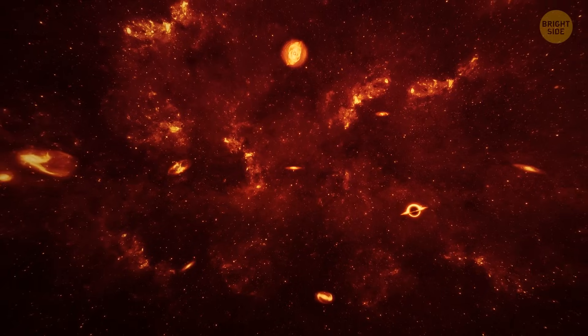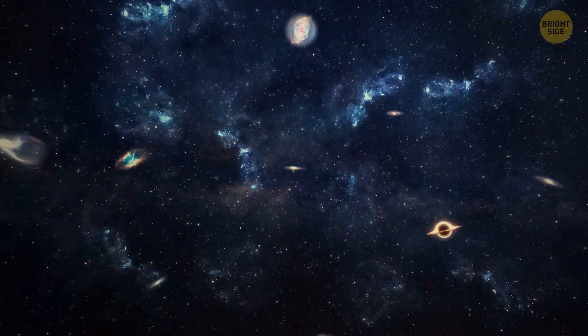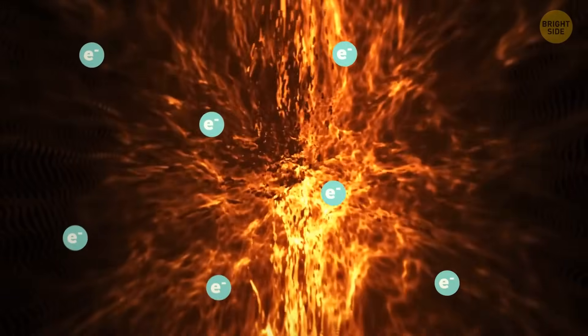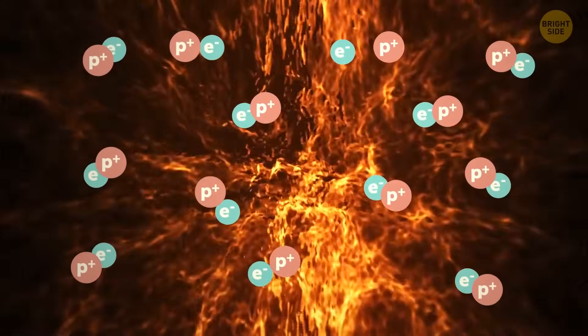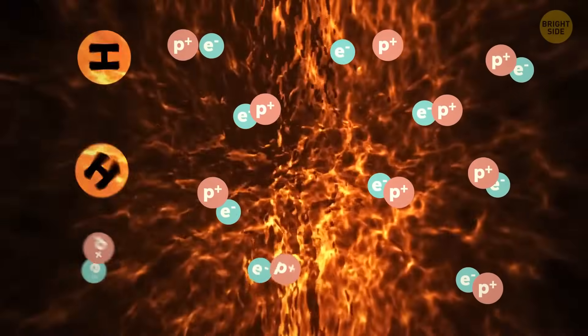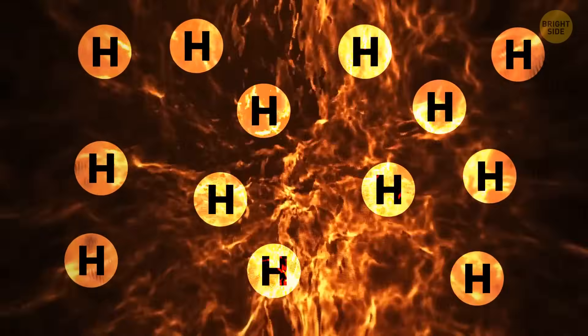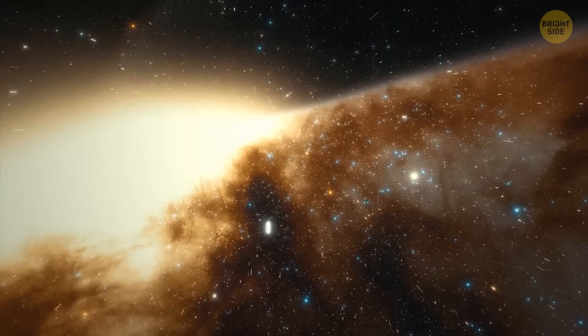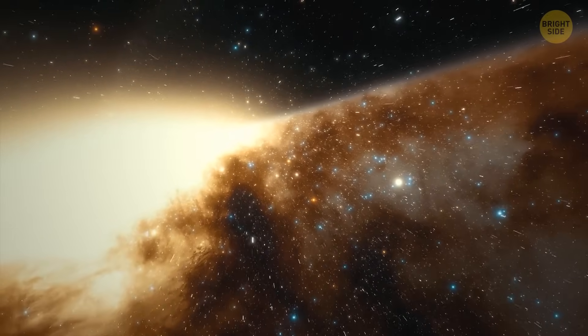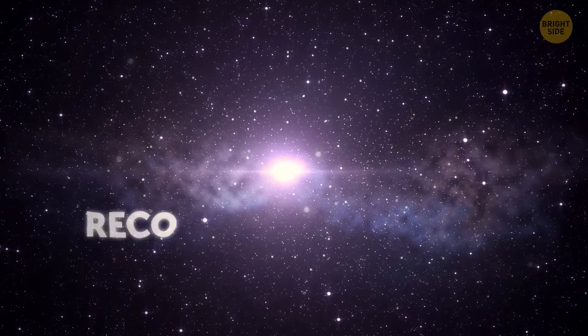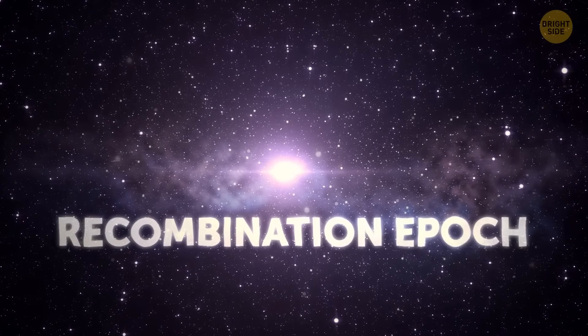As the universe did that, it began to cool down. When it turned 380,000 years old, it finally cooled enough for electrons and protons to come together. These tiny particles started to combine, forming mostly hydrogen atoms. When that happened, the universe finally became transparent, like a clear window. The moment of this magical transition is called the recombination epic.